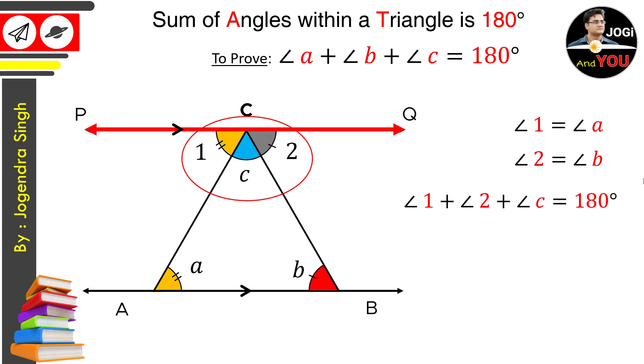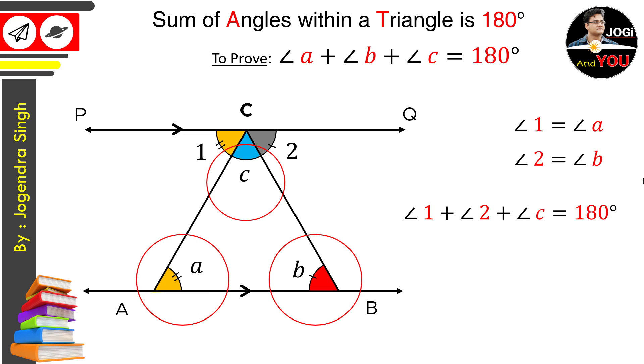Now, what we are interested in is the sum of these three angles which are angle A, B and C. Since angle 1 is equal to angle A and angle 2 is equal to angle B, we just replace 1 and 2 with the angles A and B. Look at this new equation. What does this tell you? It implies that the sum of angles A, B and C is equal to 180 degree. And this is what we want to prove, and here it is already proven.